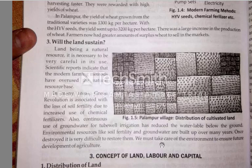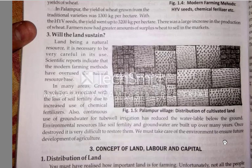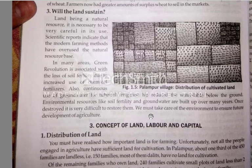We must take care of the environment to ensure future development of agriculture. If we do not use it properly, it will be destroyed and lose its fertility — there will be no production and no water below the ground. Ensure means confirm: if we want to confirm good development in agriculture, we must take care of the environment.